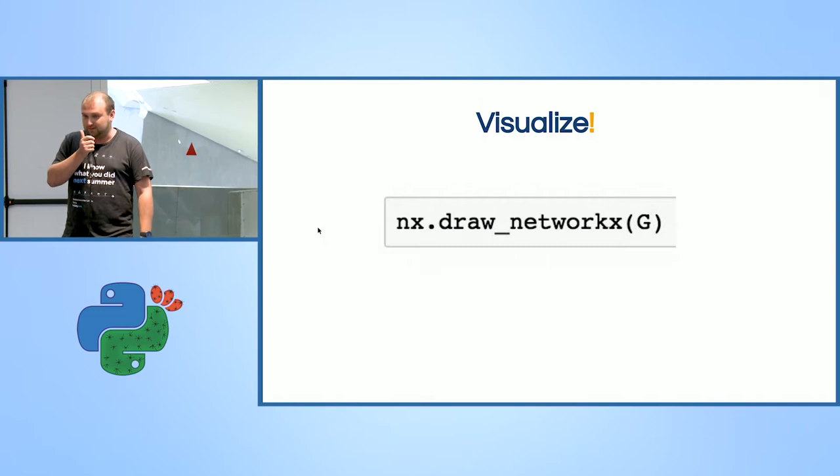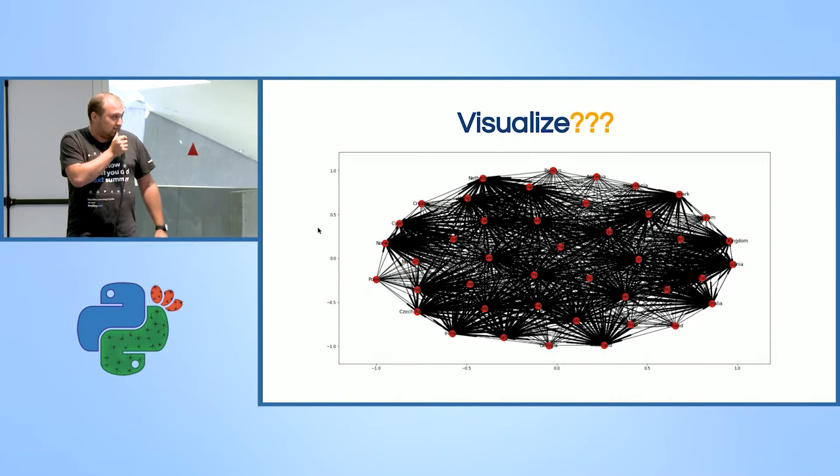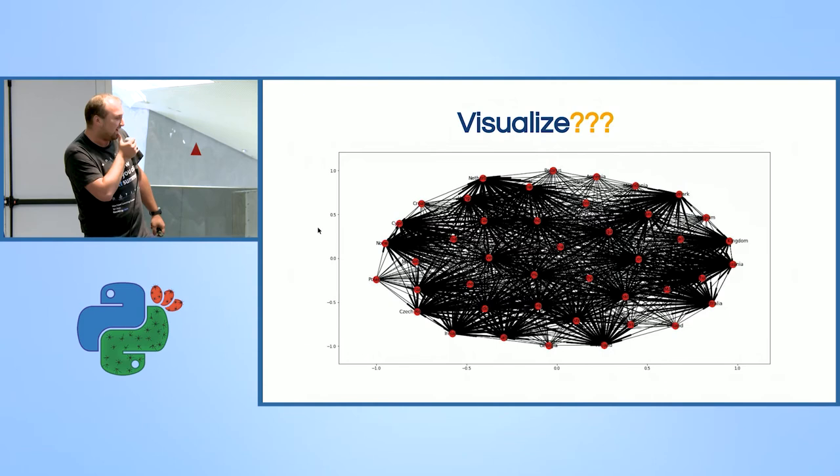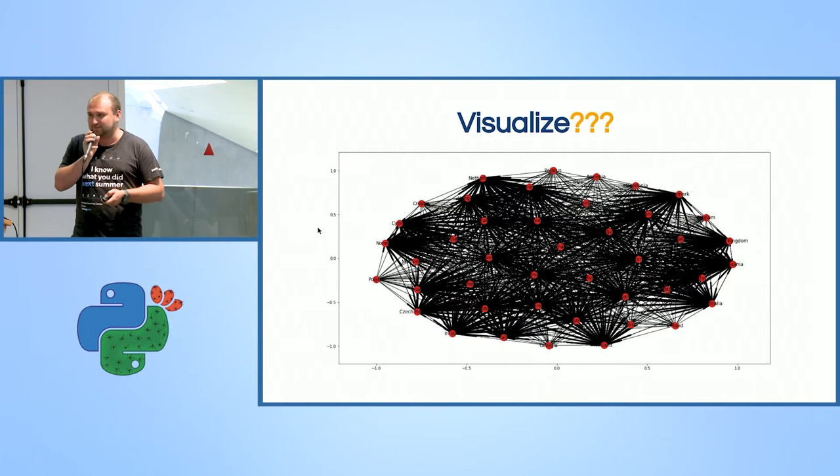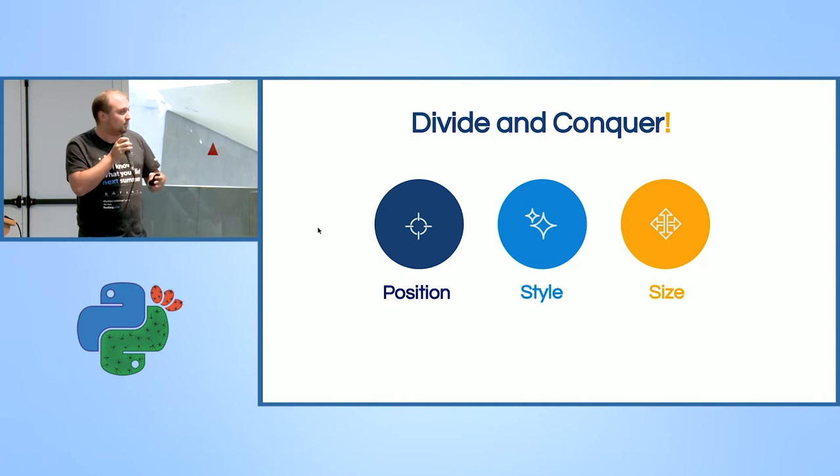All we have to do is just to visualize, and it's quite simple. I do just NetworkX draw networks G. And that's what I get. Very informative. We clearly understand that Israel won this competition. So yeah, we'll try to enhance it somehow. The first thing I'll try to explain, basically it works quite well everywhere when we try to tackle data problems, it's trying to divide it and conquer again.